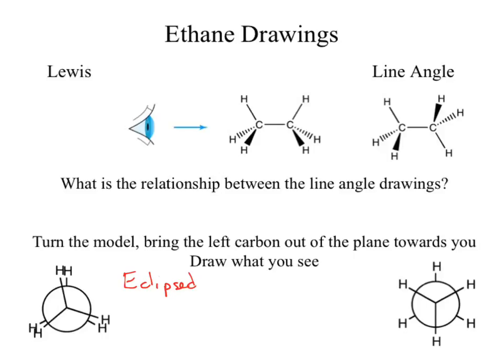What happens in the other case? We're now looking at a staggered conformation because our hydrogens are staggered from one another. Eclipsed means your bonds overlap.